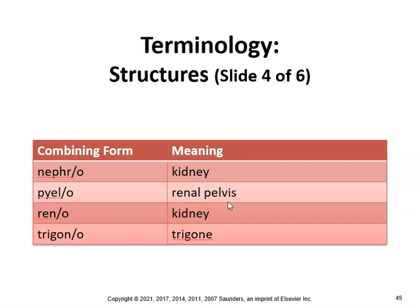A pyelogram is a radiograph or x-ray record of the renal pelvis. Rene also means kidney, so renal ischemia means holding back of blood flow to the kidney, and renal transplantation is the placement of a kidney from one person into another.